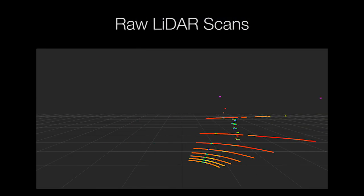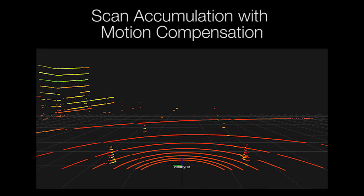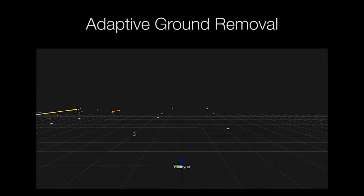The LiDAR pipeline first accumulates raw scans and compensates for motion distortion. The point cloud is segmented into bins and the ground is estimated and removed.